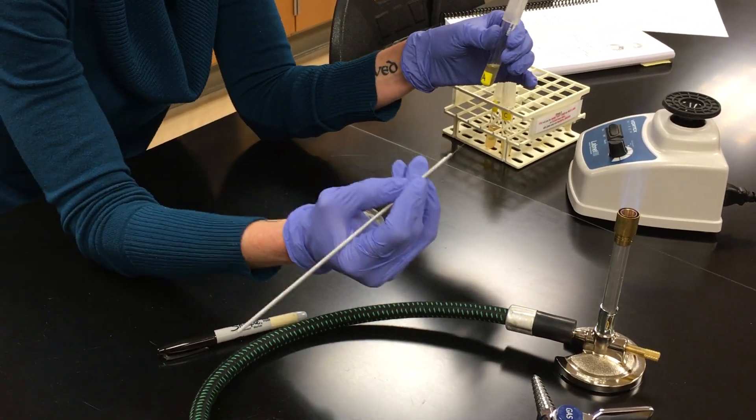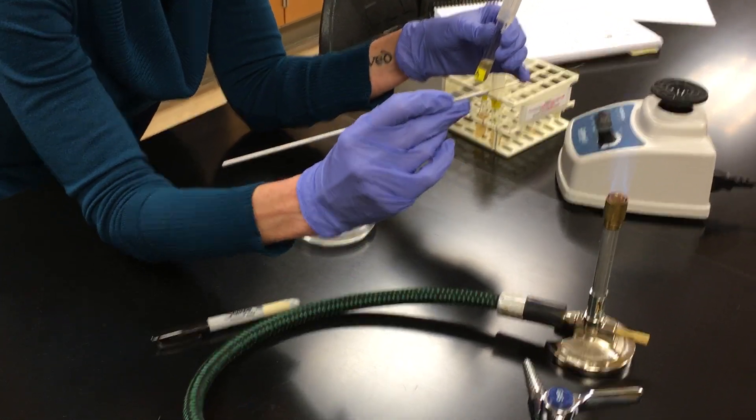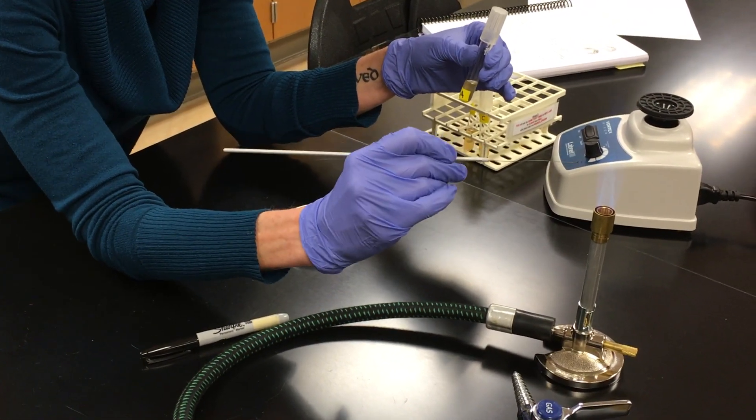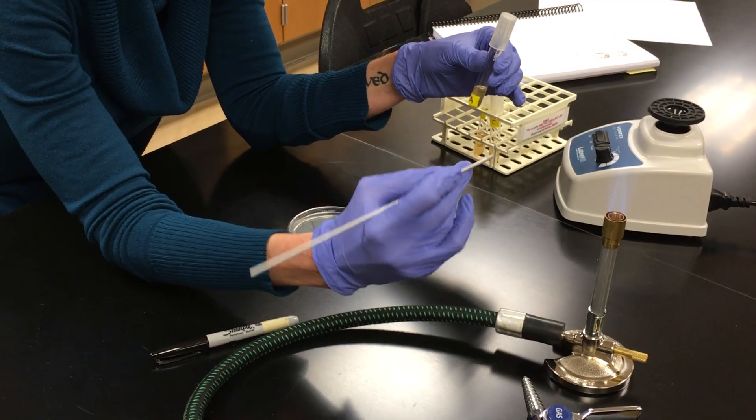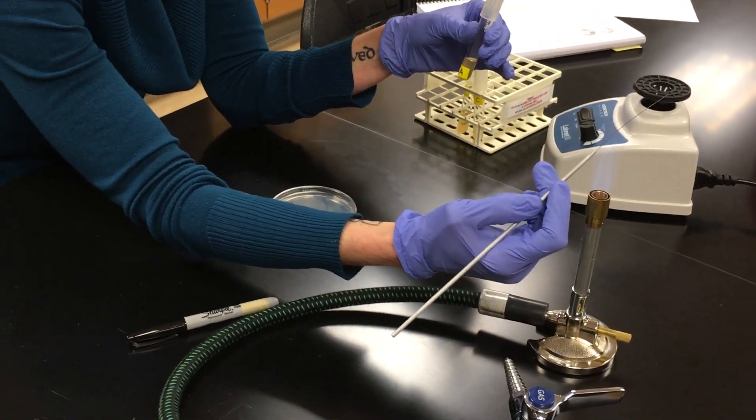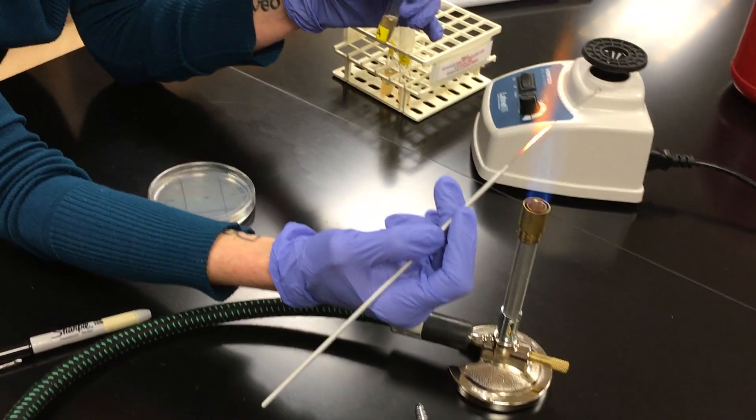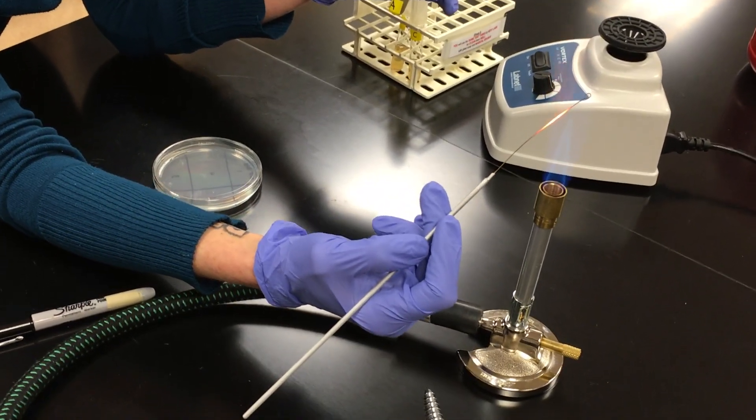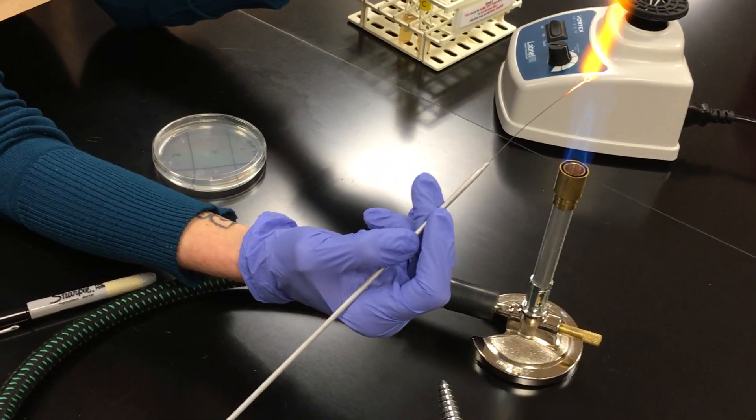We've got our loop. We're going to flame our loop. I have my nice tight cone, my blue cone in the center. That's the hottest part of the flame. You're going to start flaming your loop at the base. And so as it glows hot, and then you're going to work your way down to the end of the loop until the loop turns orange.